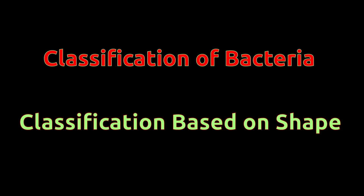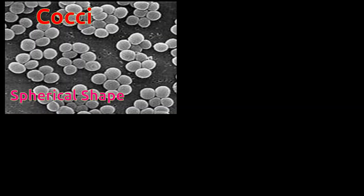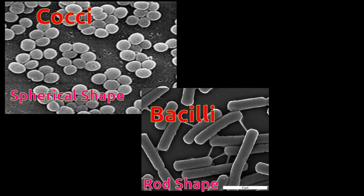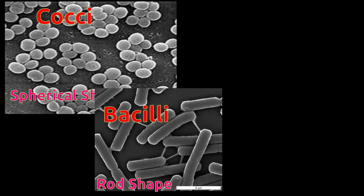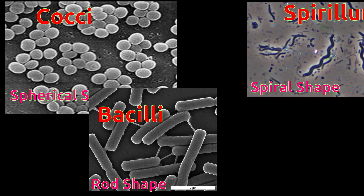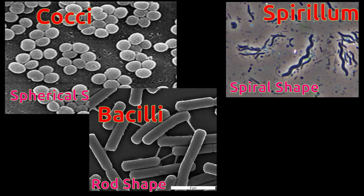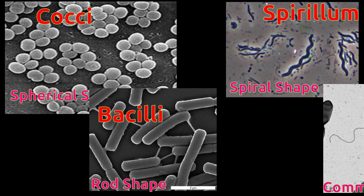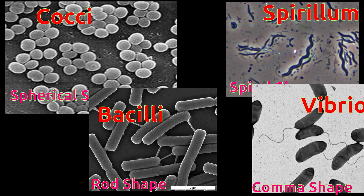Based on shape, bacteria is divided into four categories. Spherical shaped bacteria are called cocci. Rod shaped are called bacilli. Spiral or corkscrew shaped are called spirillum. Comma shaped are called vibrio.